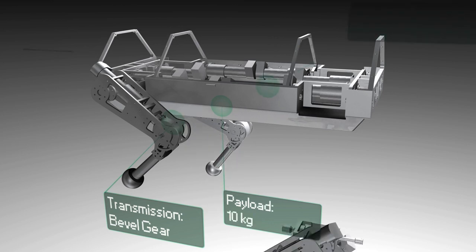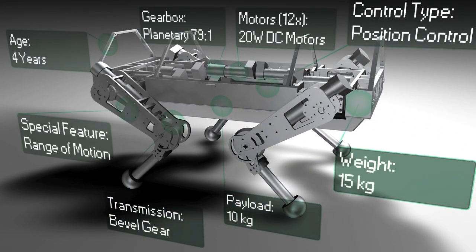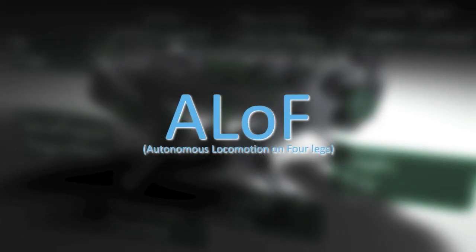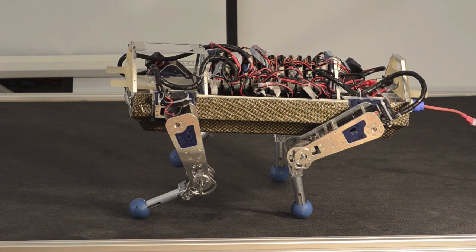Mounting four of these legs, additional motor controllers and onboard computers, we get our first quadruped robot – ALOF. To make ALOF walk, we have to coordinate all 12 joints correctly.